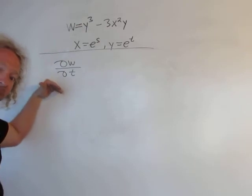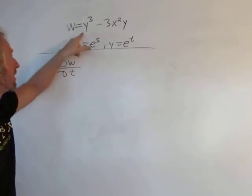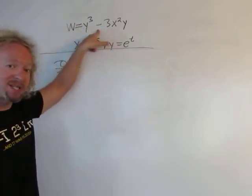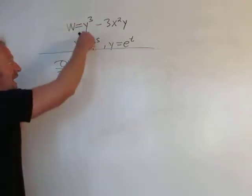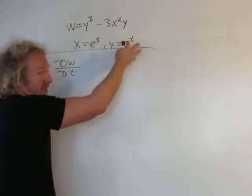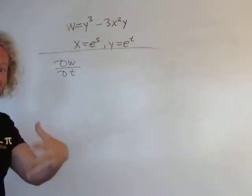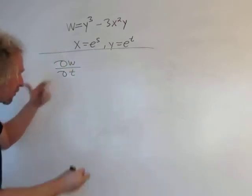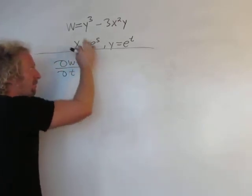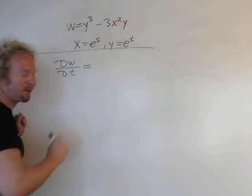So del w del t actually makes sense, because you see w, here you see you have y's and x's, but x is a function of s and y is a function of t. So w is actually a function of s and t. So this actually makes sense, the partial with respect to t. So I'm going to write the formula out and try to work through the formula.